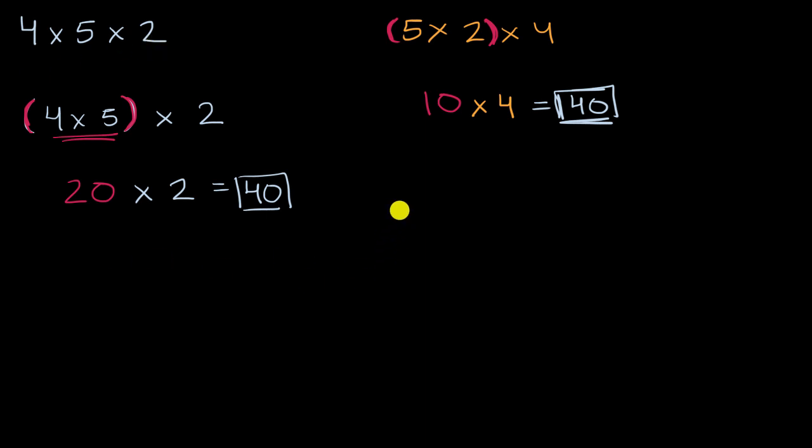Let's do 2 times 4, and then multiply that by 5. What is this going to be equal to? Well, you might notice again, 2 times 4 is 8. You multiply that times 5. Well, once again, we got 40.